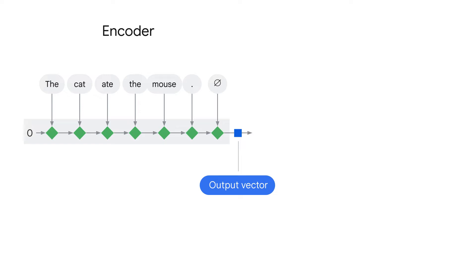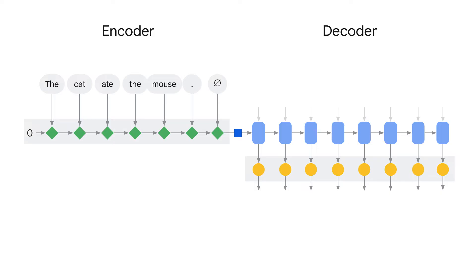What about the decoder part? The decoder takes the vector representation of the input sentence and produces an output sentence from that representation. In the case of a RNN decoder, it does it in steps, decoding the output one token at a time using the current state and what has been decoded so far.